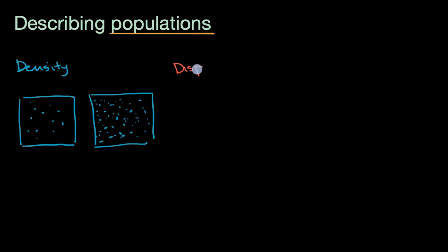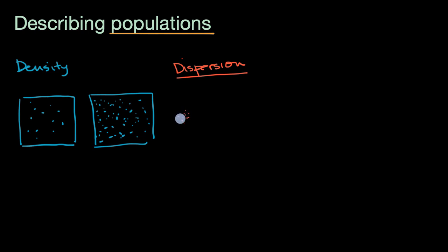The next way we can describe populations is dispersion — how that population is actually distributed within an area. One way to think about dispersion is clumped dispersion, where a lot of the individuals of that population like to clump together. Reasons they might do that include protection, warmth, finding food, and avoiding predators.